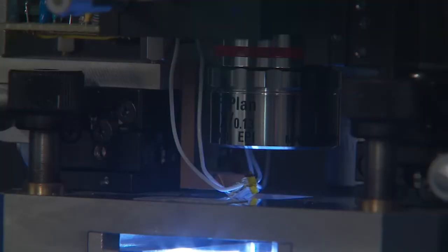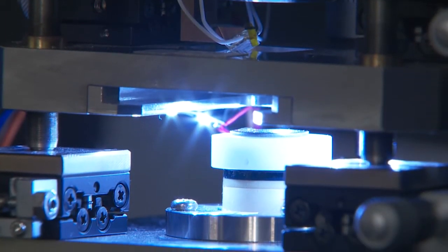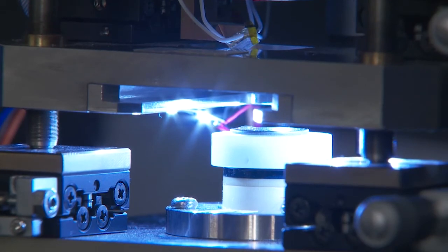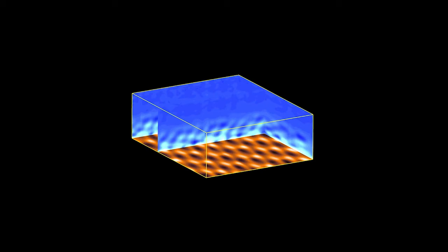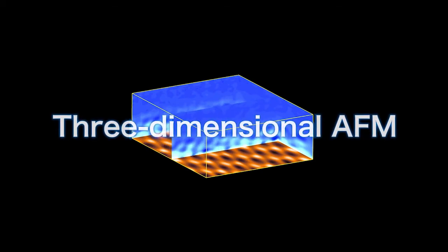Conventional AFM was able to observe material surfaces, but only in two dimensions. Professor Fukuma and his group have developed an AFM to provide three-dimensional images of water and other molecules on the surface of materials.